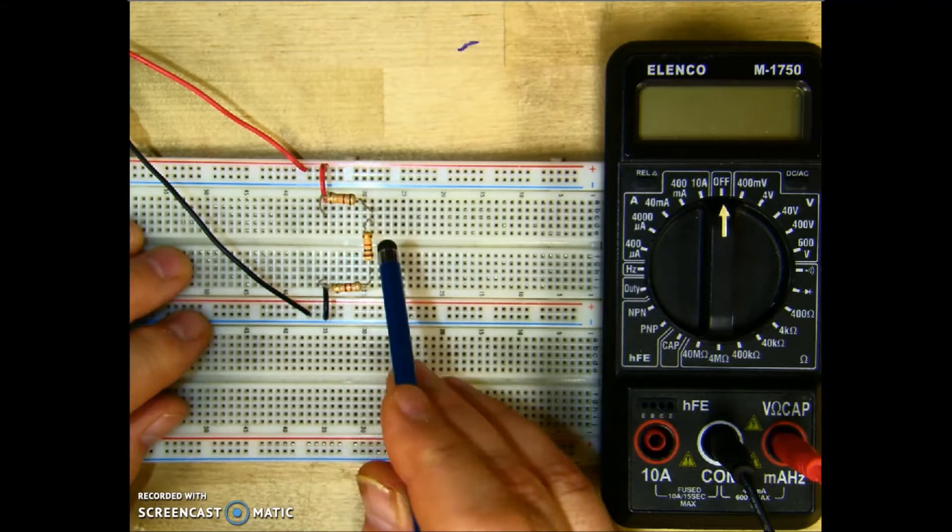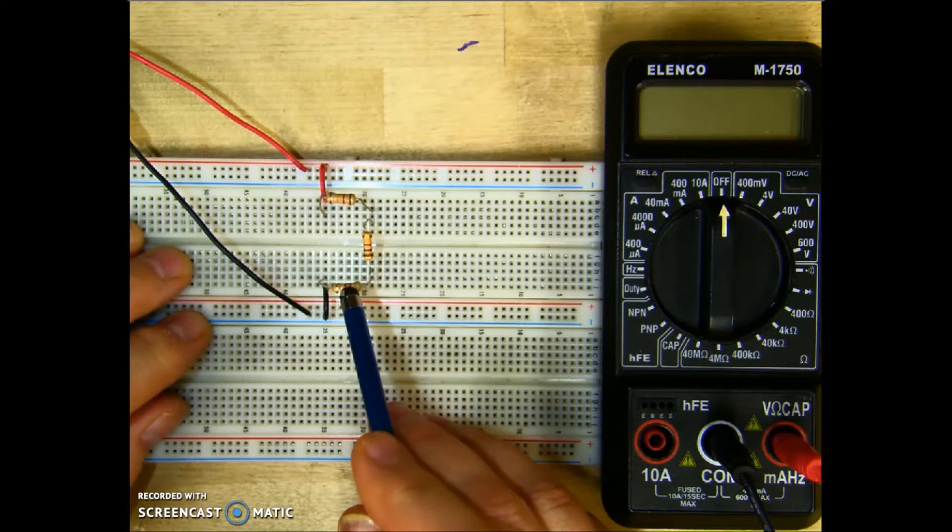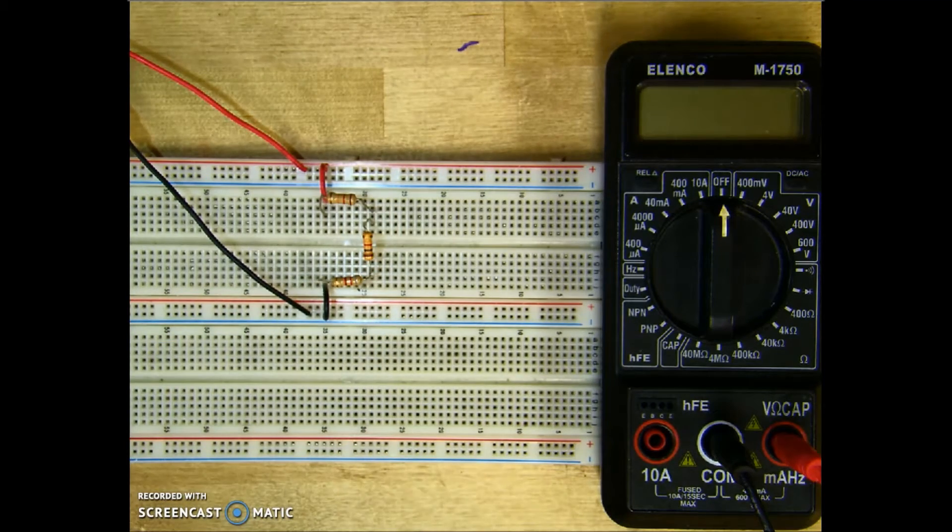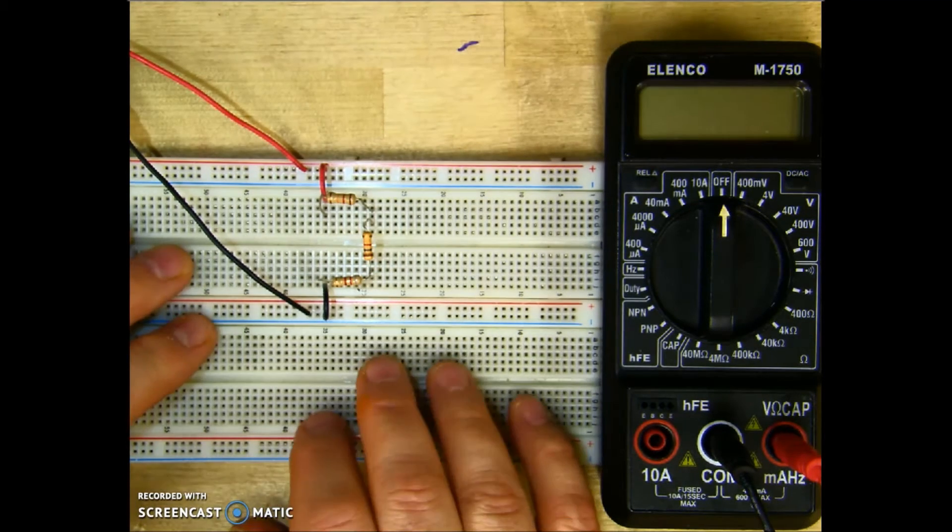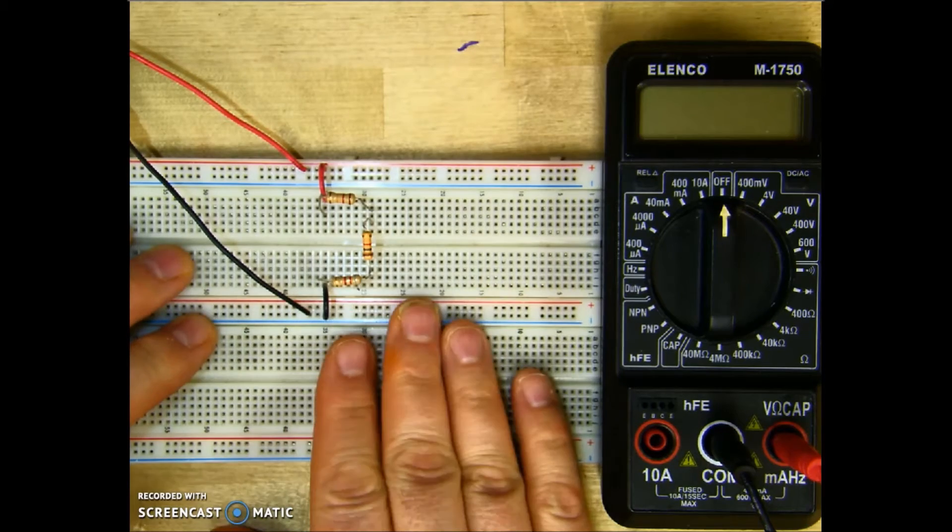R1 is 12k, R2 is 1k, and R3 is 8.2k. What we are going to do today is look at how to properly take voltage, current, and resistance readings on the series circuit.